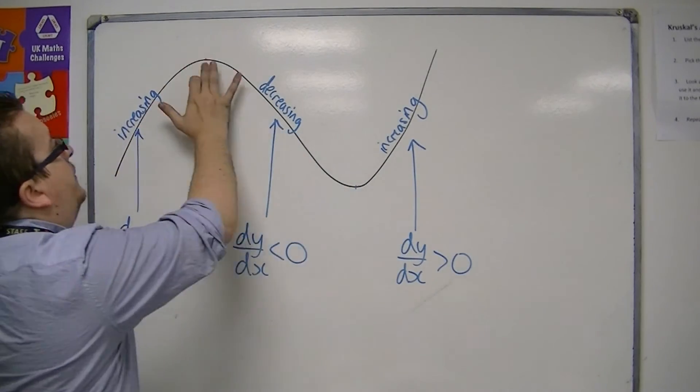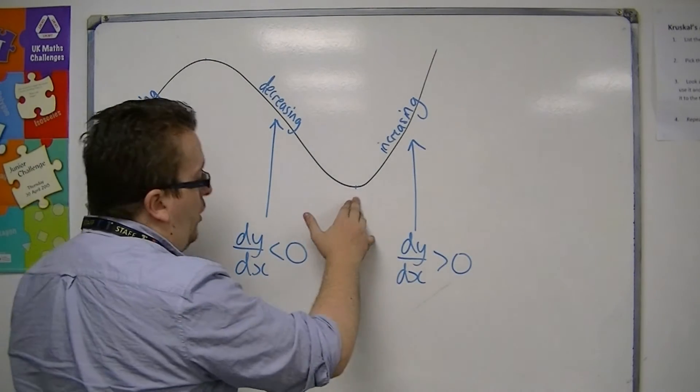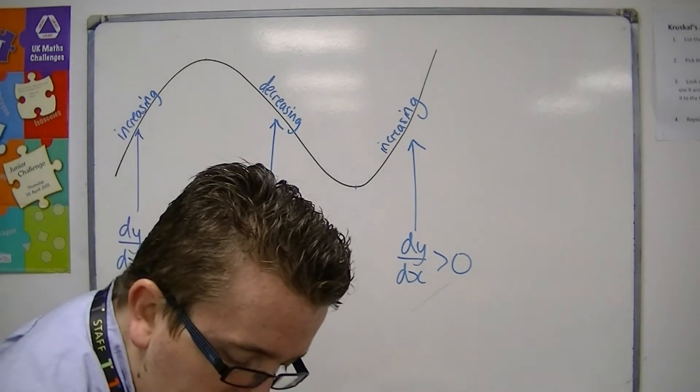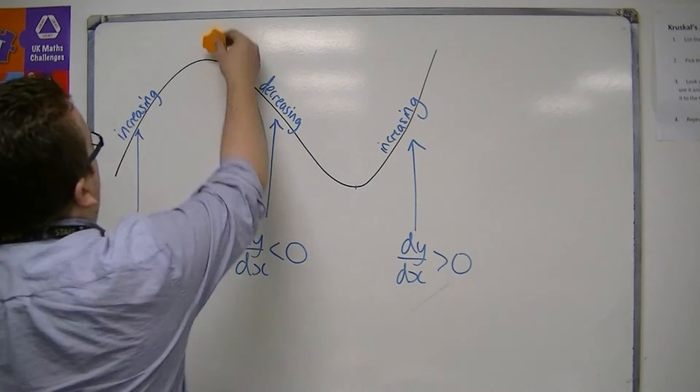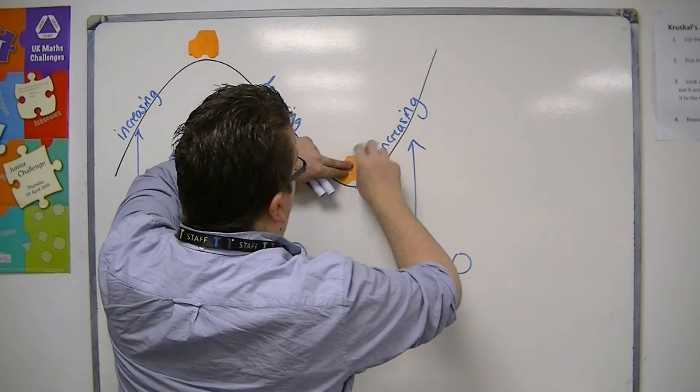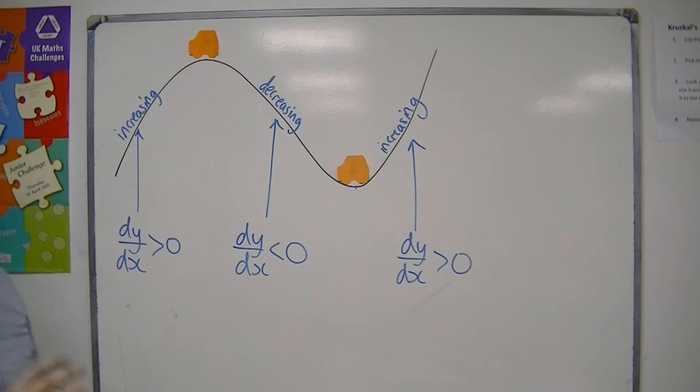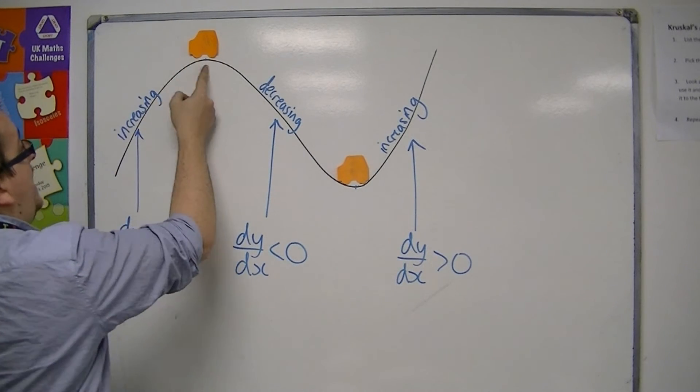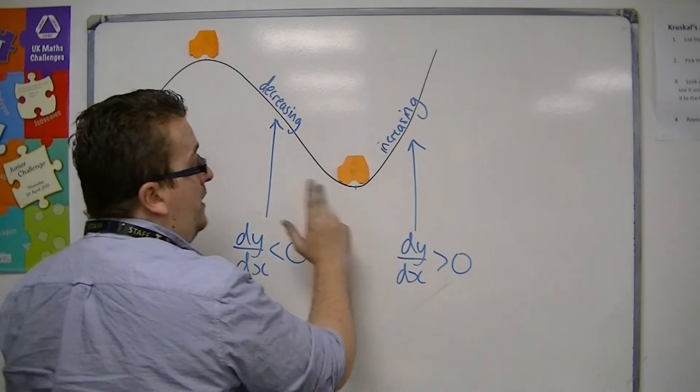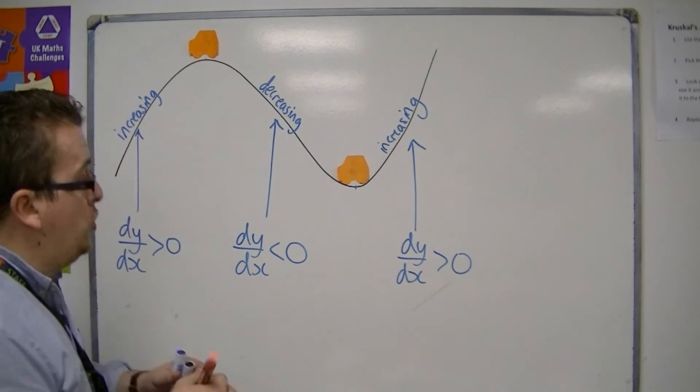And then there are these two points, these turning points, if you will, that are referred to as stationary points. Effectively, you can kind of imagine these as the points where you can park your car with the brake off without the car rolling down a hill. If the car is perfectly parked at the top of that hill, then it won't roll either way. And the same with that point there. So these are referred to as stationary points.